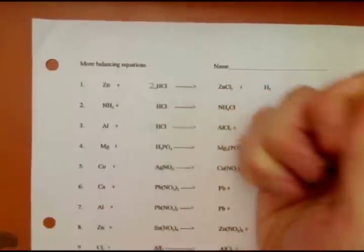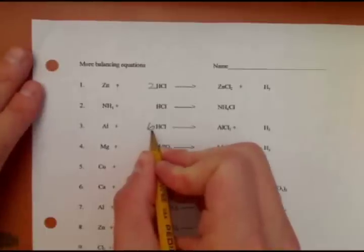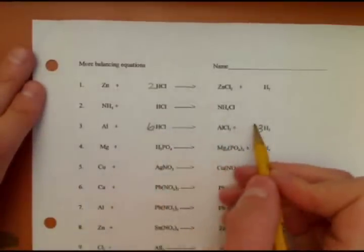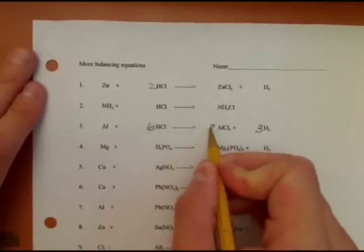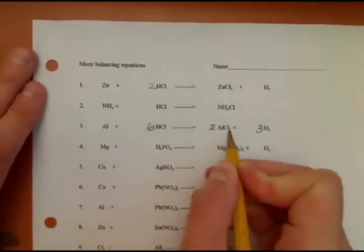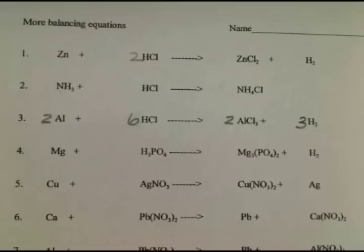So I want six hydrogen, which means I put a 6 there and a 3 there, and I'll have six hydrogen and six hydrogen. But I just messed up my chlorine, which means I have to put a 2 there and a 2 there.